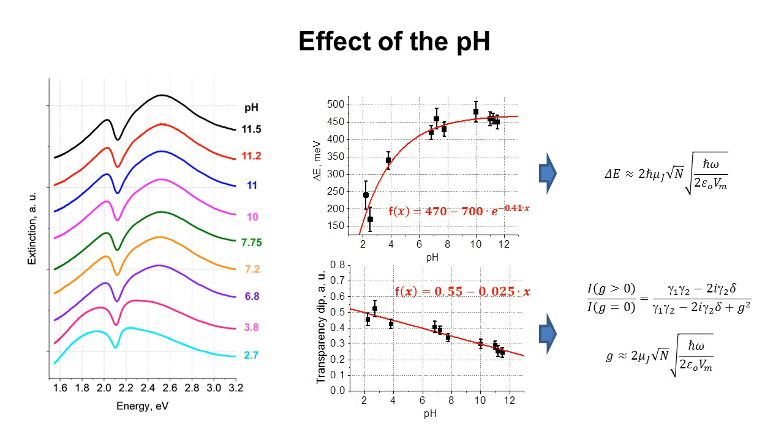Another possible modality of monitoring pH is the use of the induced transparency phenomenon. The lower right graph shows the dependence of the transparency dip on the pH of the solution. It is almost linear in the range from pH 11 to pH 2 with a two-fold total change. Thus, two different parameters can be used for remote sensing of pH with the use of the designed plasmon exciton complexes: the Rabi splitting energy and the relative depth of the induced transparency dip.